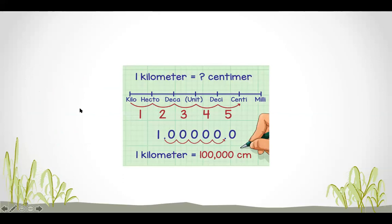Another example: how many centimeters are in one kilometer? Start with the kilometer and place the decimal after the one. Using the chart, count from kilo down to centi — that's five steps. Move the decimal five places to the right, fill in zeros, and you get 100,000 centimeters.